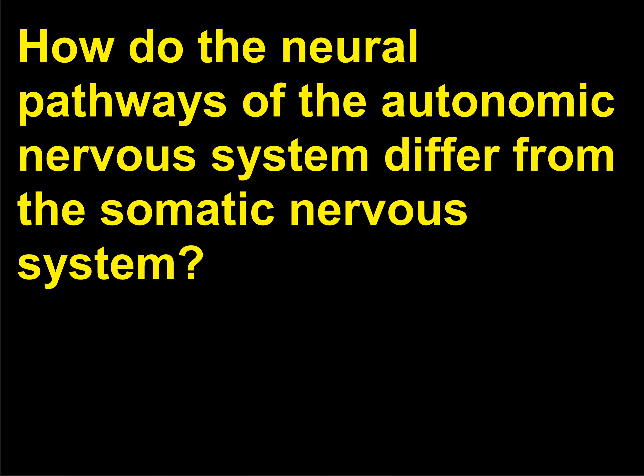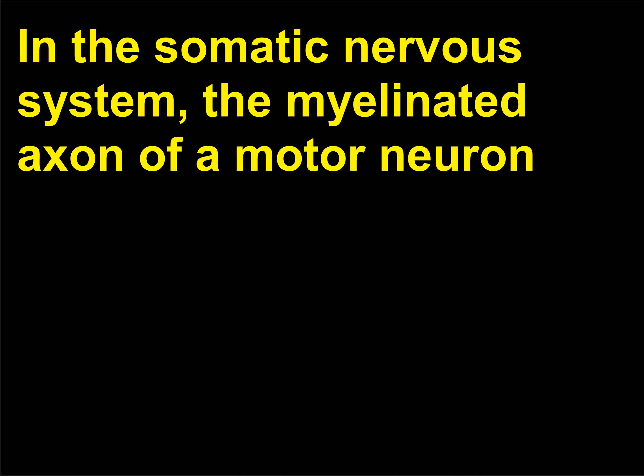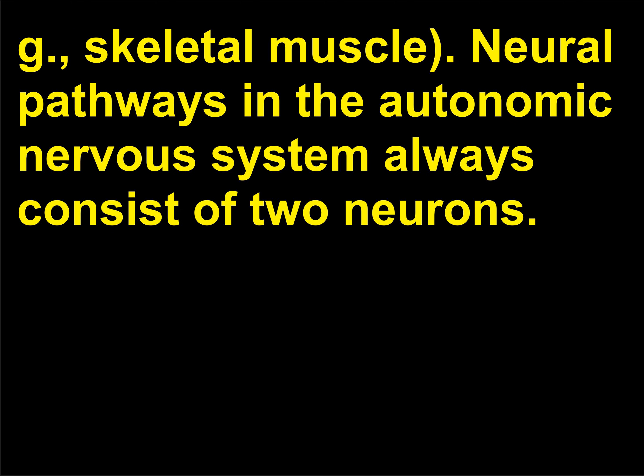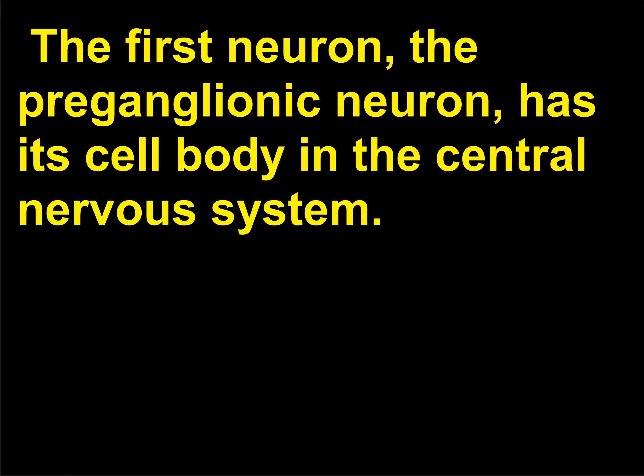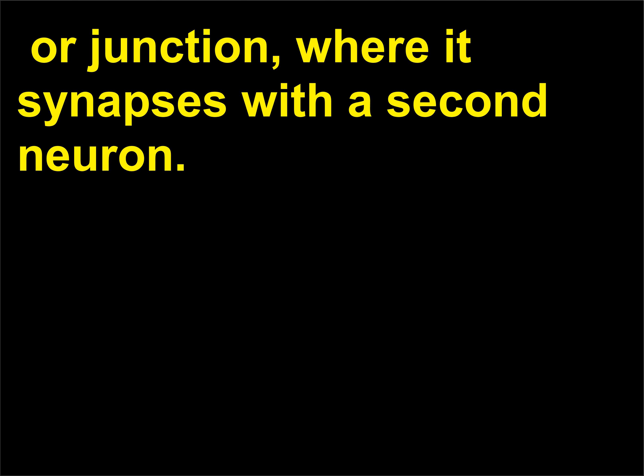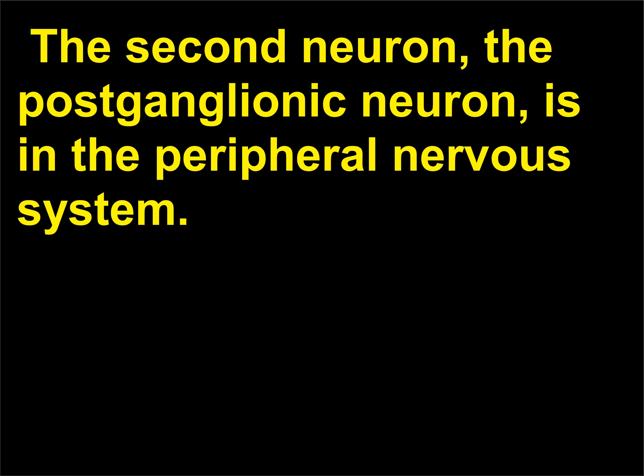How do the neural pathways of the autonomic nervous system differ from the somatic nervous system? In the somatic nervous system, the myelinated axon of a motor neuron extends directly from the central nervous system to the effector, e.g., skeletal muscle. Neural pathways in the autonomic nervous system always consist of two neurons. The first neuron — the preganglionic neuron — has its cell body in the central nervous system, and its myelinated axon extends to an autonomic ganglion where it synapses with a second neuron. The second neuron — the postganglionic neuron — is in the peripheral nervous system.